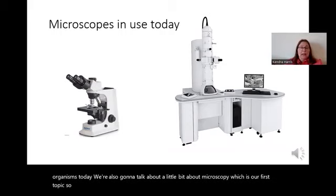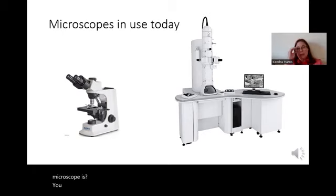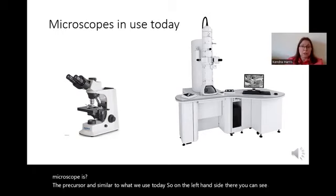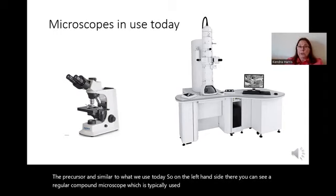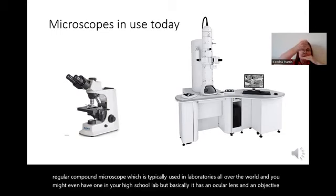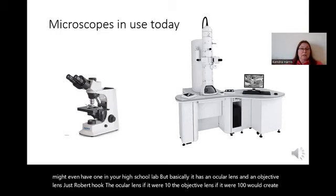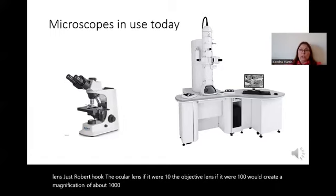Robert Hooke had the first compound microscope, and his microscope is the precursor to what we use today. On the left-hand side you can see a regular compound microscope, typically used in laboratories all over the world. It has an ocular lens and an objective lens, just like Robert Hooke's. If the ocular lens were 10 and the objective lens were 100, that would create a magnification of about 1000 times.